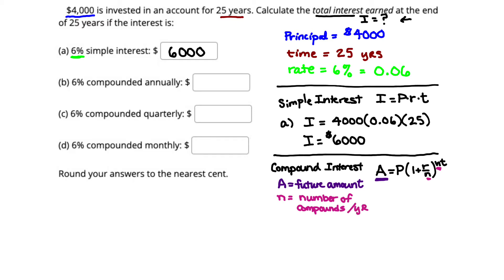Now, since we are compounding annually, that means that our number of compounds per year is going to be one. Our future amount, well, that is also unknown. So not only do we not know our interest, but we also don't know our future amount. Let's start by using the formula we're given to find our future amount.